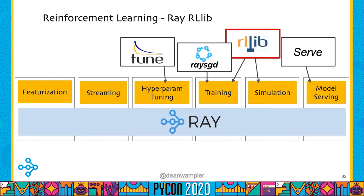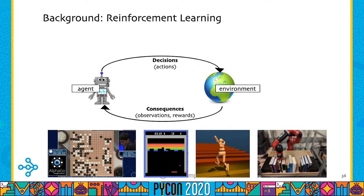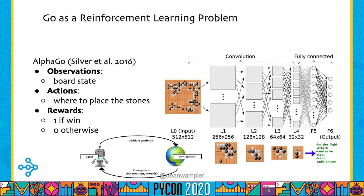In reinforcement learning, an agent acts in an environment, observing what's going on, making decisions about actions, and observing the reward it receives. The goal is to optimize rewards over a sequence of steps. Famous examples include the AlphaGo system that beat the world's best Go player — one of the things that really put reinforcement learning on the map. It's also been used to play Atari games, train simulated robots, and even teach simulated walkers to walk. In AlphaGo, a large neural network helps make decisions; the observations are the board state, the actions are where to place stones, and the rewards are simply whether you win or not.